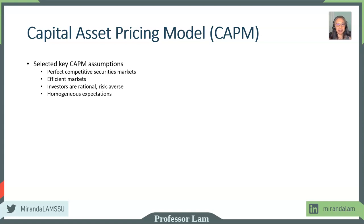Finally, this is a key assumption: homogeneous expectation among investors. This means that if investors are given the same information, they will process it the same way and come to the same conclusion. If you're given the same set of facts, you will draw the same conclusion. These are the four key assumptions.